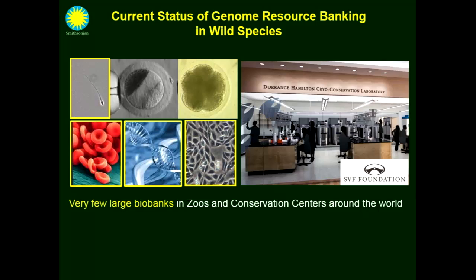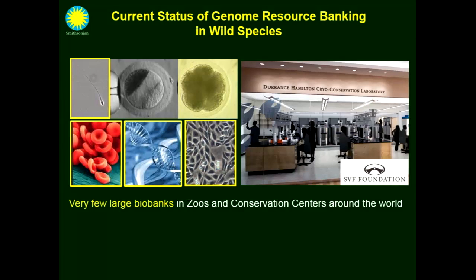Associated with assisted reproductive techniques is genome resource banking and cryobiology. We are mainly freezing semen. We don't do a lot of embryos, and we also freeze cell lines for genetic studies, DNA samples, and blood products. But there are not a lot of really large biobanks in zoos and conservation centers around the world because it's expensive to maintain, requires a lot of space and sophisticated equipment. I want to mention the effort we are making with our colleagues from the SVF Foundation — we are building a new state-of-the-art facility in Front Royal, Virginia that will serve as a repository for heritage breed collections as well as our own wild species collections.